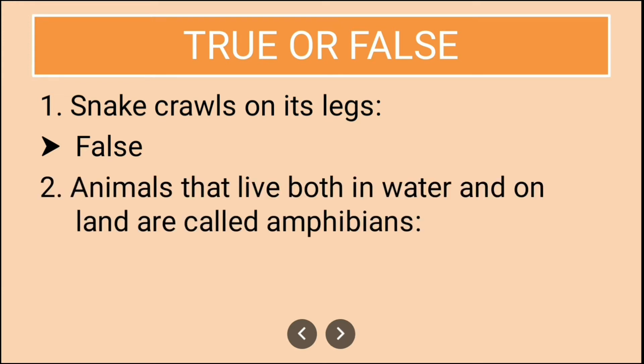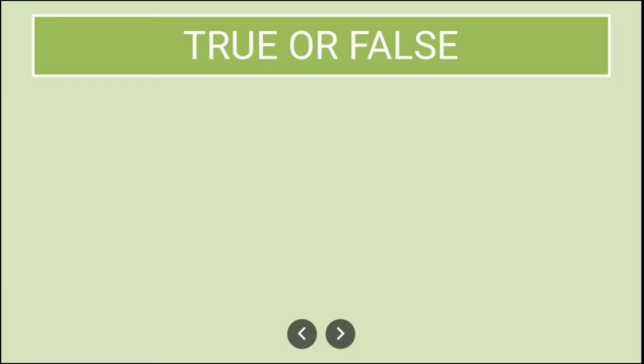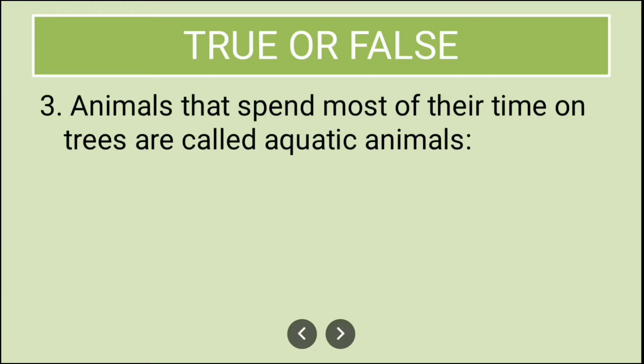Next statement: animals that live both in water and on land are called amphibians. This is true. Amphibians can live in both land and water, so it is a true statement.